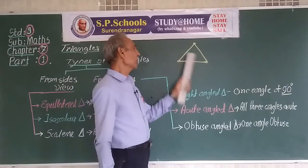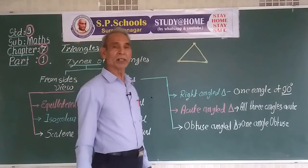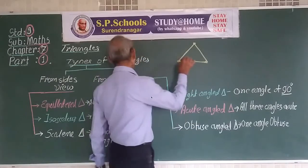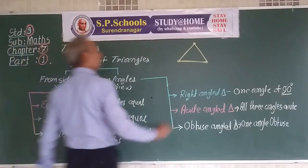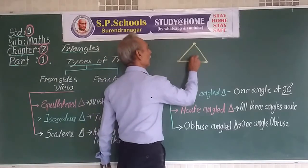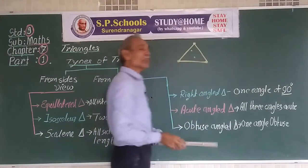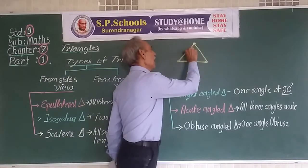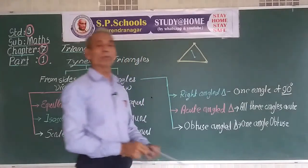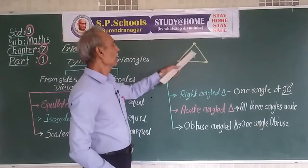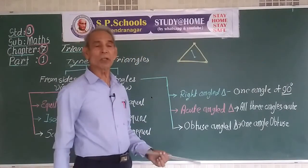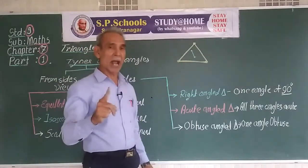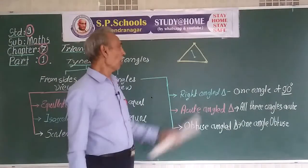The points which are in the interior have a special property. If you take any two points lying inside the interior of the triangle and join them with a line segment, the whole segment will always lie in the interior of the triangle.